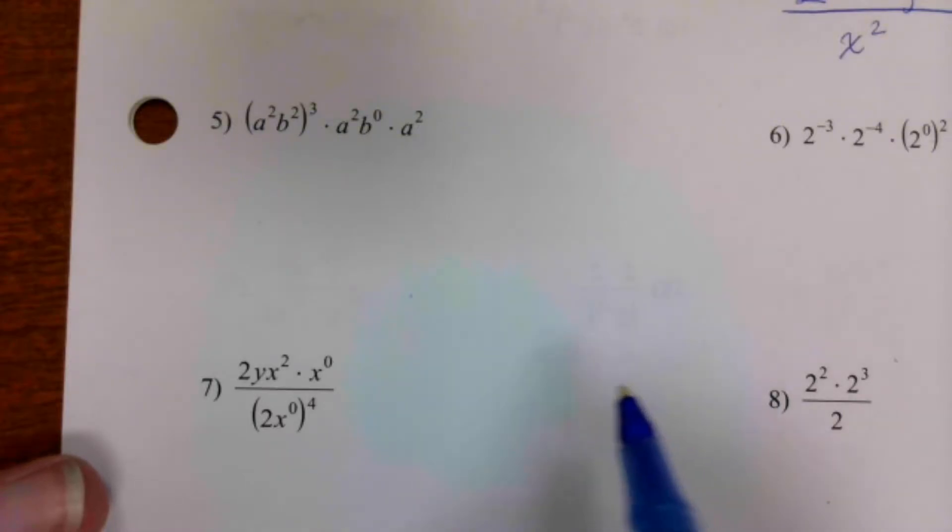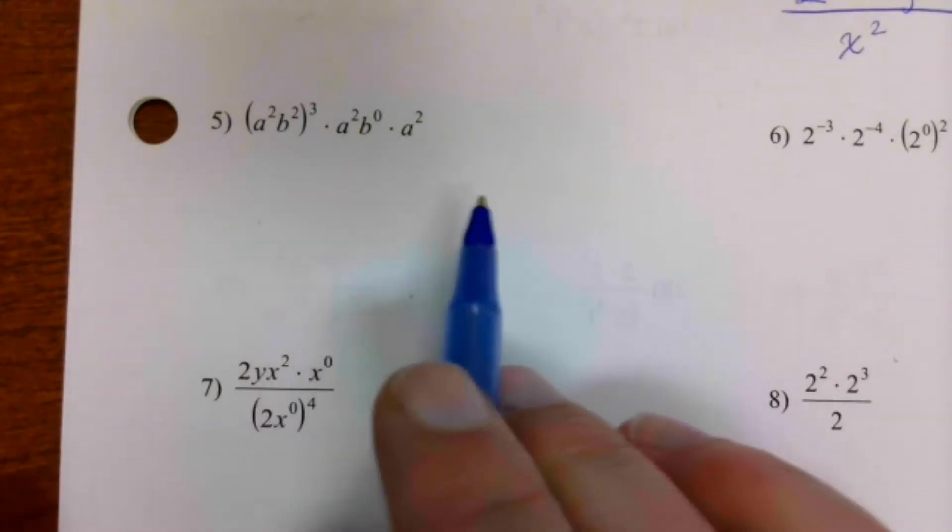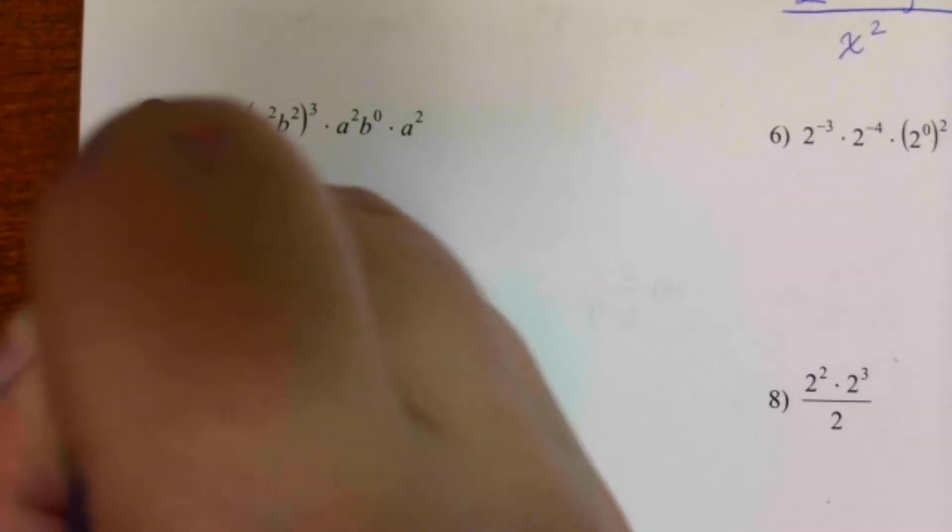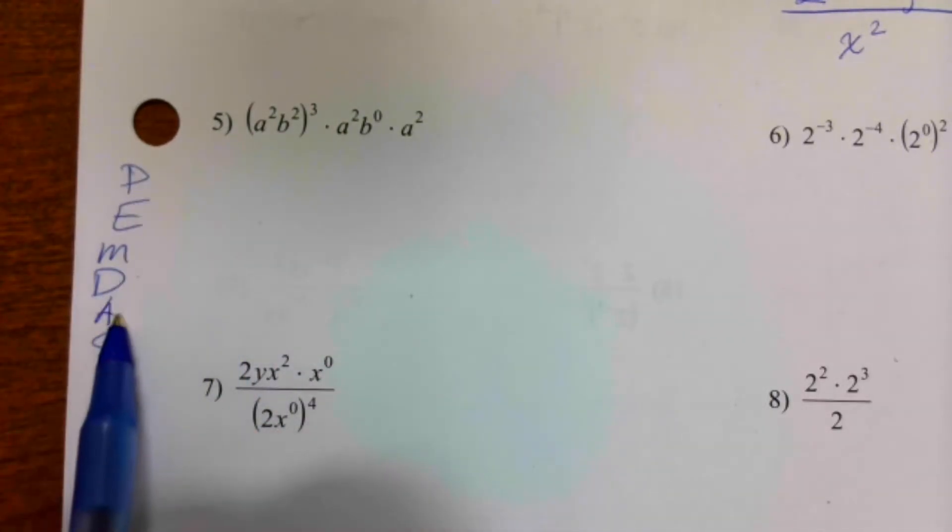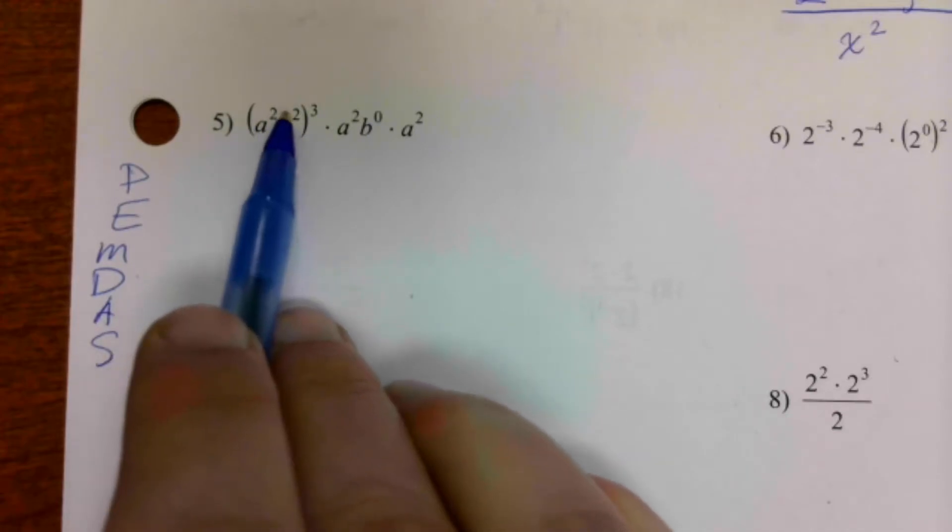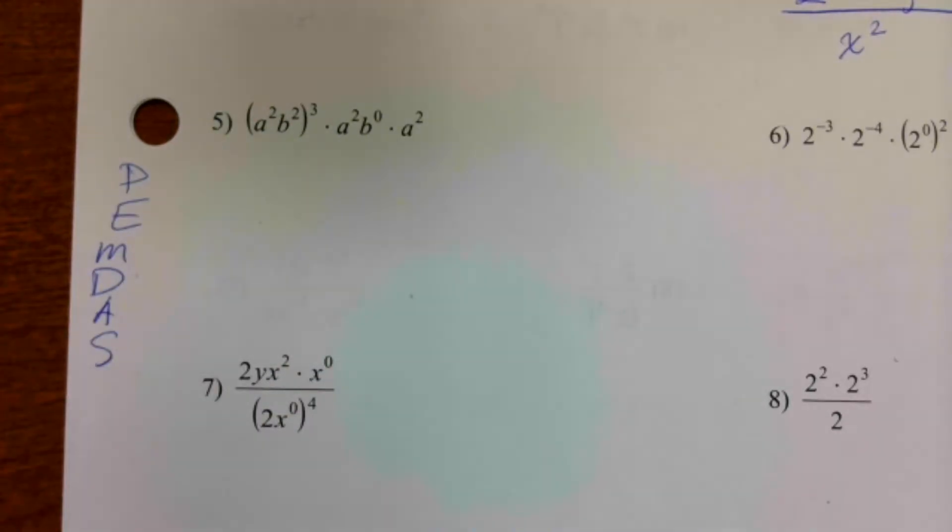Number five. Alright, there's a lot of things going on, so let's remember PEMDAS. We're going to do the parentheses first. Is there anything I can do inside here? No, because those are different letters. So I've done the parentheses.